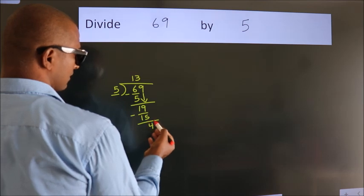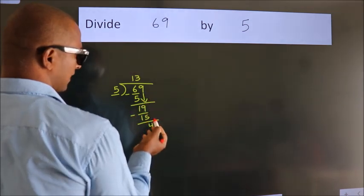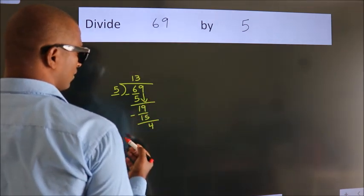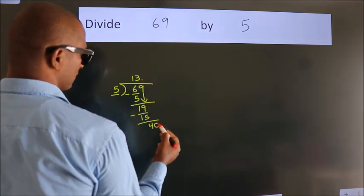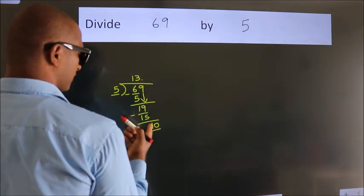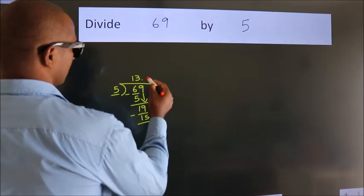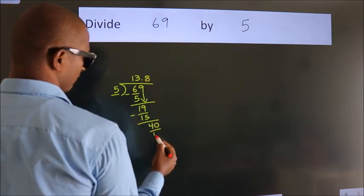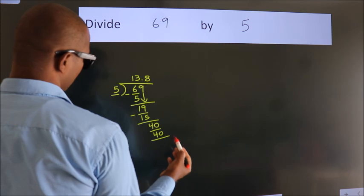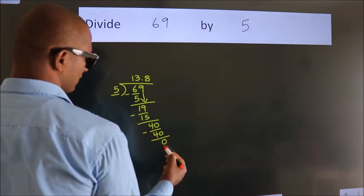After this, no more numbers to bring down. So what we do is, we put a dot and take 0. So, 40. When do we get 40 in the 5 table? 5 eights, 40. Now we subtract. We get 0.